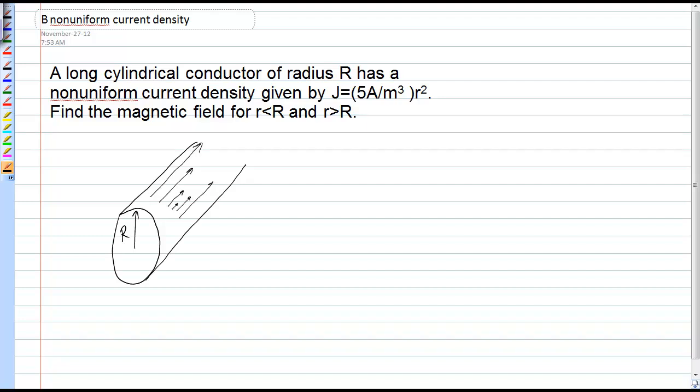And the function that describes this current density is j equals 5r squared.